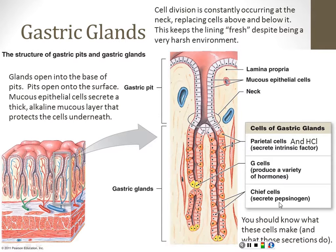You should know these three cell types and what they produce. Parietal cells make hydrochloric acid and also produce intrinsic factor, which is necessary for us to absorb vitamin B12. We have to have B12 in order to live, so it's important, but not as important as the hydrochloric acid these cells produce.